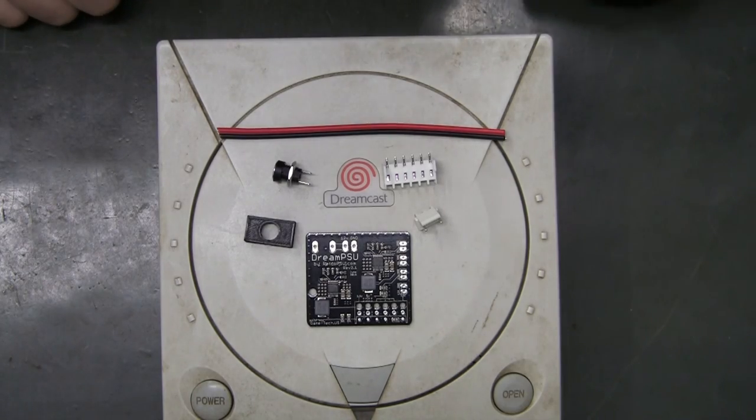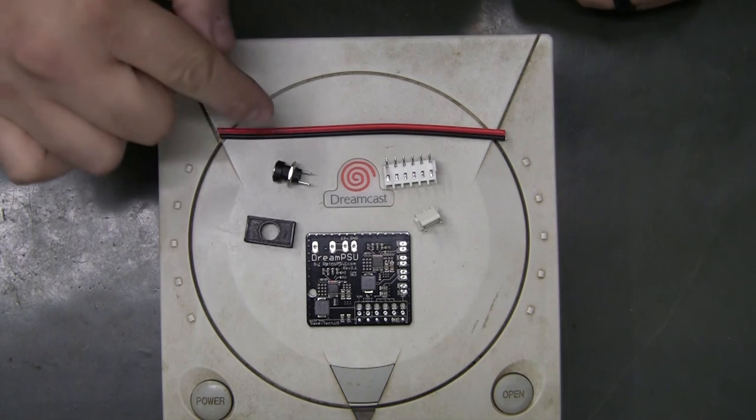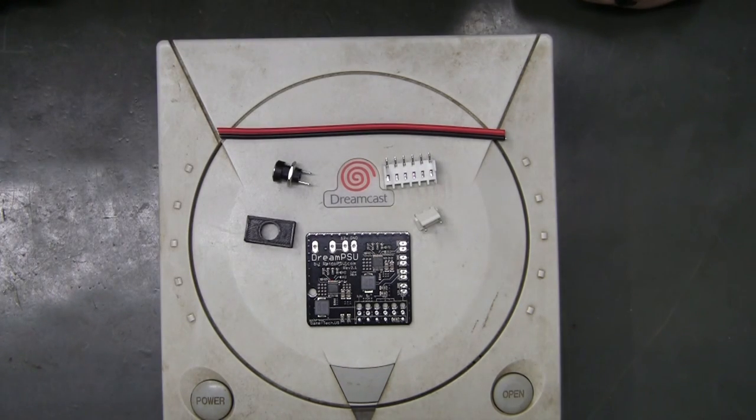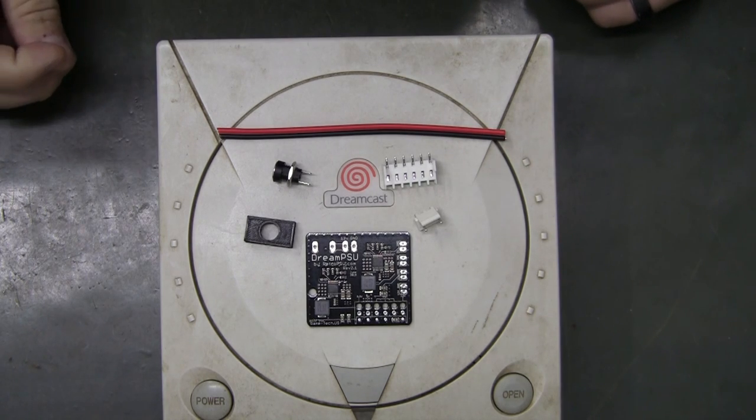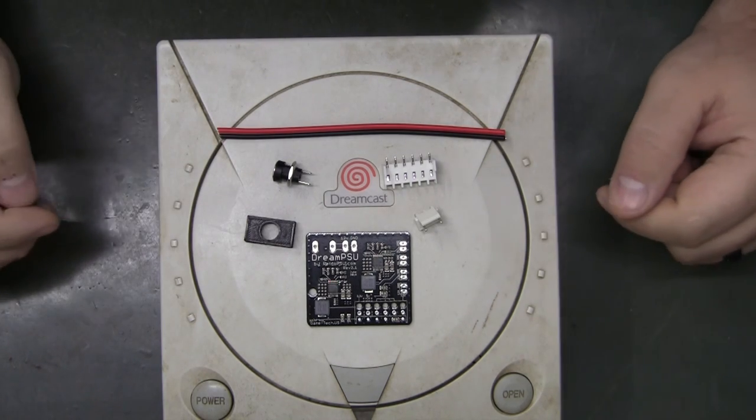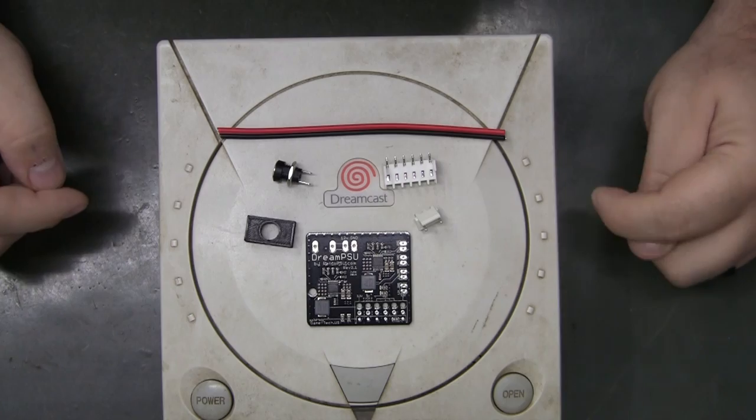Alright, so I'm going to do an installation of the Dream PSU. These are the six pieces that you will get in the unassembled kit, and of course they will be solderless and drop-in if you order it fully assembled.